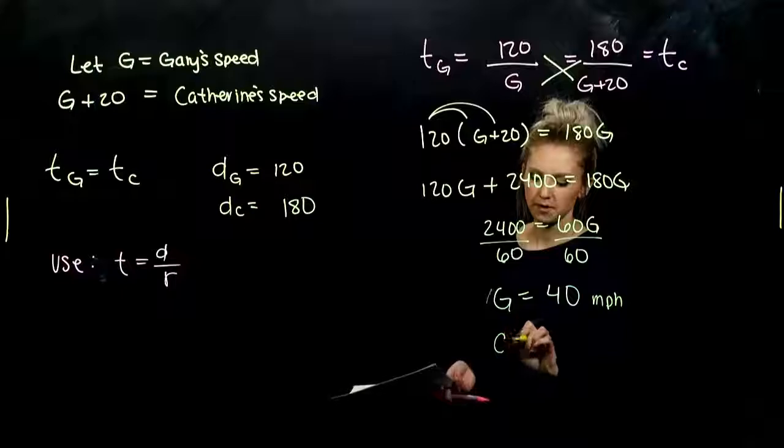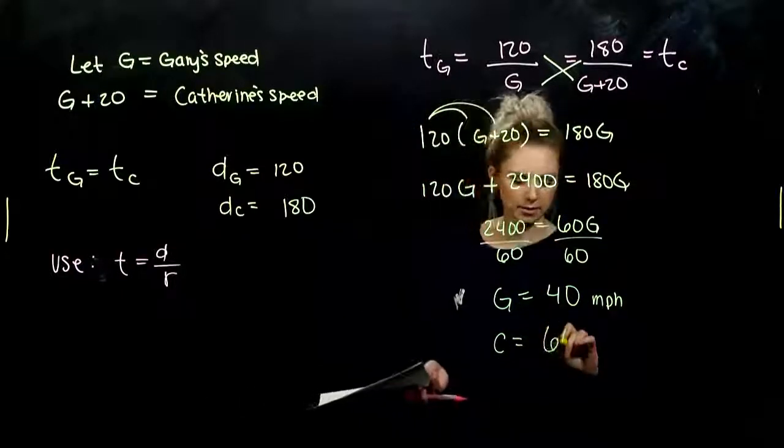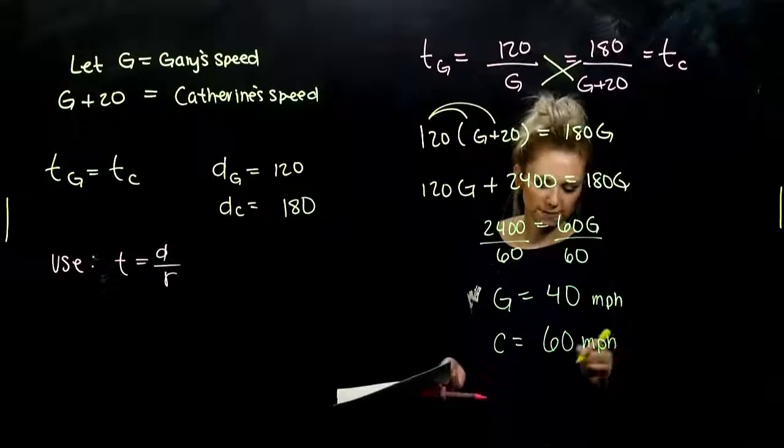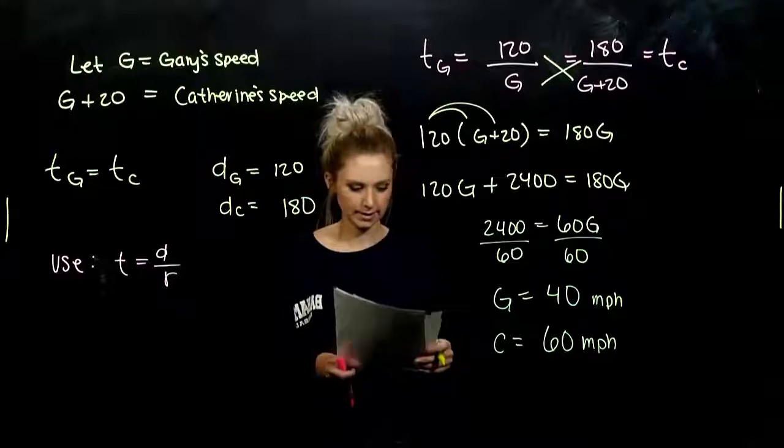So what does that tell me about Catherine? She's going how fast? 60 miles per hour. 20 faster than what Gary's traveling. So in the very end, again, it's good to sum it up in a sentence.